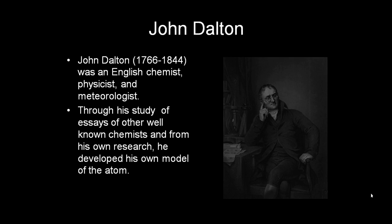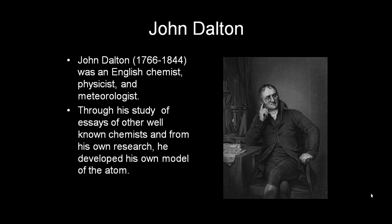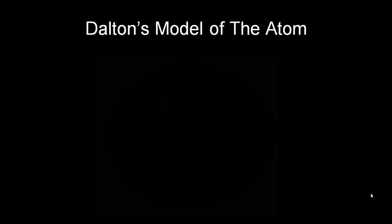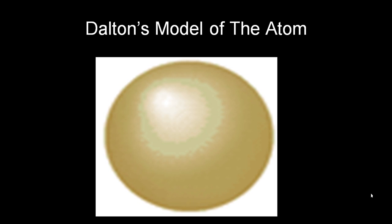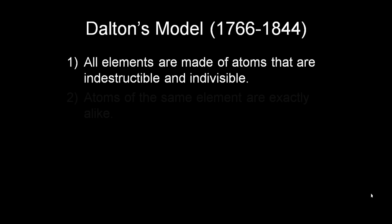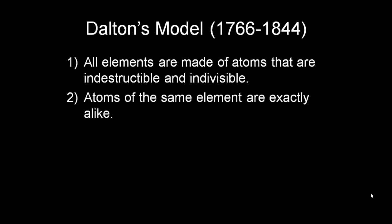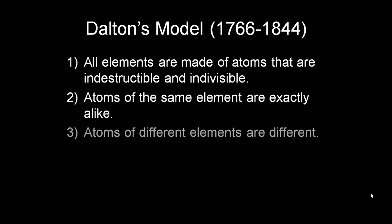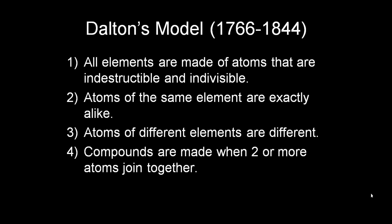Based on his research and the research of other chemists, John Dalton came up with his own model of the atom. John Dalton thought the atom was a solid sphere. He thought that all elements are made of atoms and they're indestructible and indivisible, that all atoms of the same element are exactly alike, that all atoms of different elements are different, and that when two or more atoms join together, they make what's known as a compound. This was very important to the model of the atom because some of these things still hold true today.